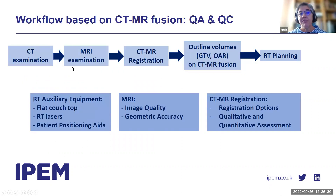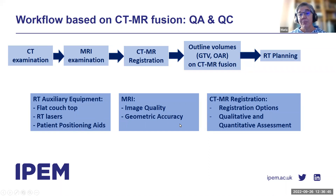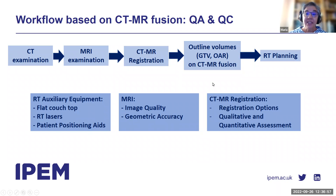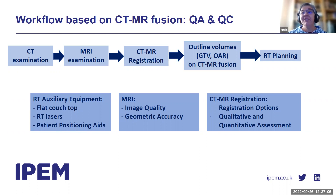This section is roughly divided into three parts. We are going to start by looking at auxiliary equipment with Stephen — mostly for the benefit of MRI personnel. Then I'm going to talk about the MRI examination itself and the additional needs for geometric accuracy. Finally, Ben is going to talk about CT-MR registration, also mostly for the benefit of MRI personnel, because we tend to lose sight of what happens to our images after they leave the MR unit.